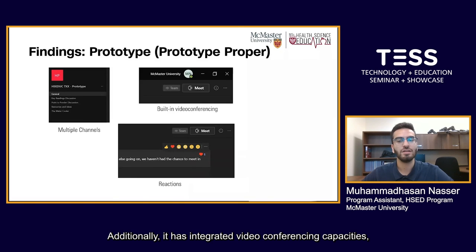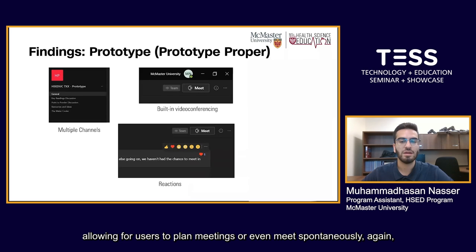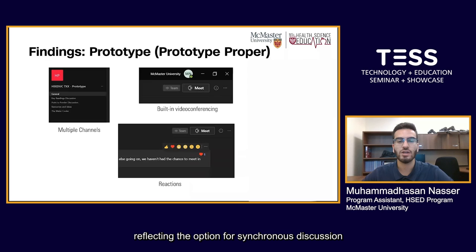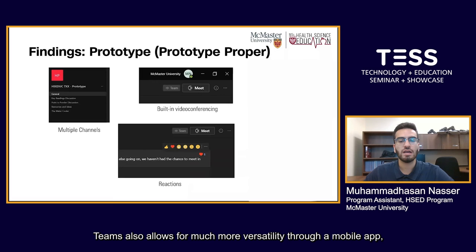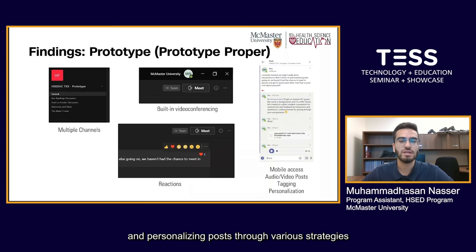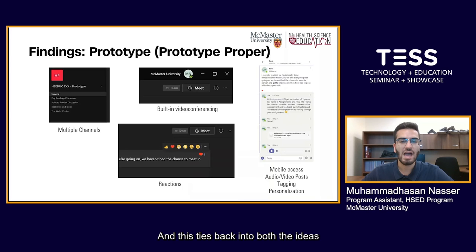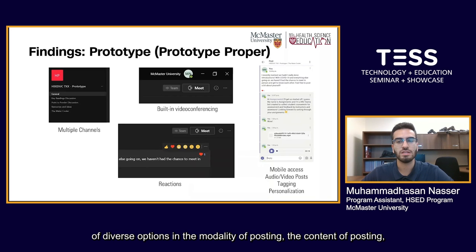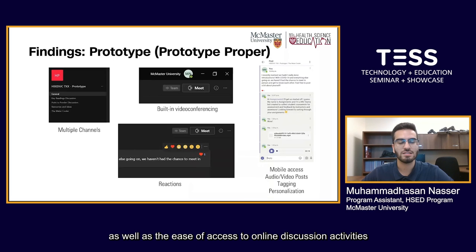Additionally, Teams has integrated video conferencing capacities, allowing users to plan meetings or even meet spontaneously, reflecting the option for synchronous discussion identified by learners. Teams also allows for much more versatility through a mobile app, video and audio posting options, tagging other users in posts and comments, and personalizing posts through hyperlinks, file attachments, and customizing the size, color, styling, and structure of text. This ties back into the ideas of diverse options in modality and content of posting, as well as ease of access through various internet-connected devices.